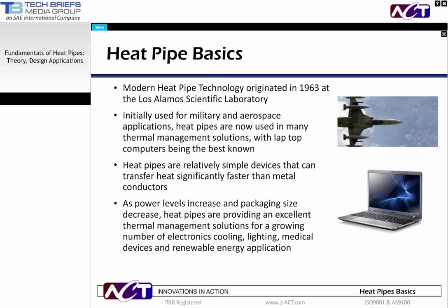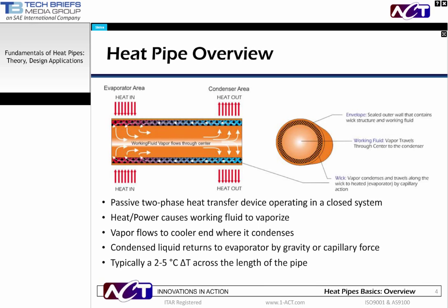Modern heat pipes have been around since the 60s, when they were developed at Los Alamos Laboratory and were initially used in military and aerospace applications. With the dramatic proliferation of electronic devices that has occurred since then, heat pipes have found many new applications, with laptop computers probably the best-known one. Heat pipes are relatively simple devices conceptually, although they can provide significantly better heat transfer than metal conductors. As electronic devices become more powerful but also more compact, heat pipes are more frequently a critical part of the thermal management solution for many products in military, lighting, medical, and renewable energy markets.